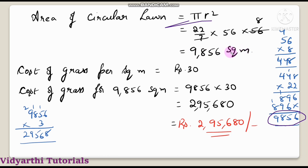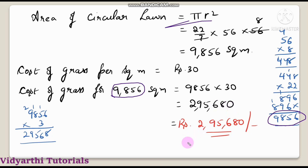The cost of grass per square meter is rupees 30. So the total cost for 9856 square meters is 9856 into 30, which equals rupees 2,95,680.